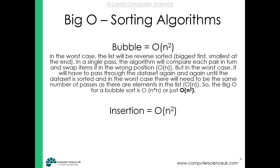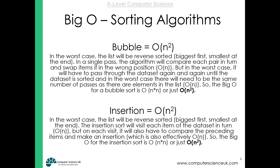The insertion sort algorithm is also O(n²). In the worst case, the list is reverse sorted. The insertion sort visits each item in the data set in turn via a for loop — that's O(n). But on each visit, it also has to compare the preceding items and make insertions, which is effectively also O(n). So the Big O for insertion sort is O(n²): N items to visit, and N comparisons including the insertion for each. So O(n²) in the worst case.